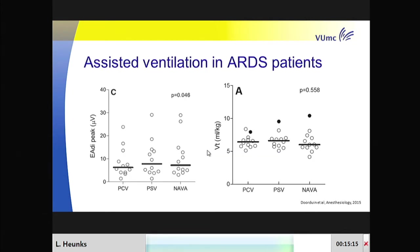Looking at diaphragm effort across assist pressure control, pressure support, and NAVA, there was no significant difference between the three modes. In general, tidal volume was around 6 ml per kilogram. Only one patient seemed to be a little bit of a problem, and I'll come back to that in a minute.